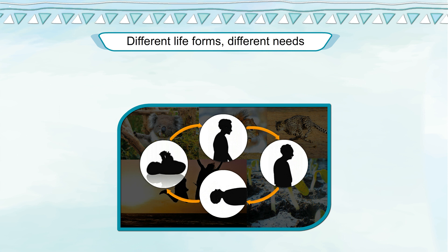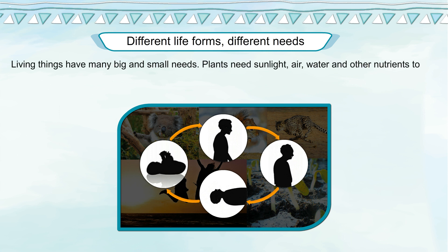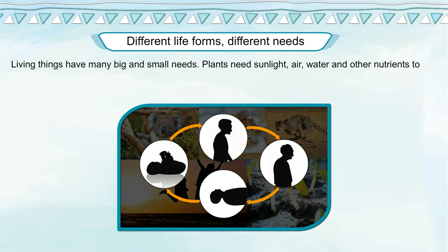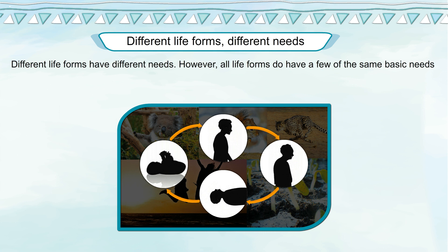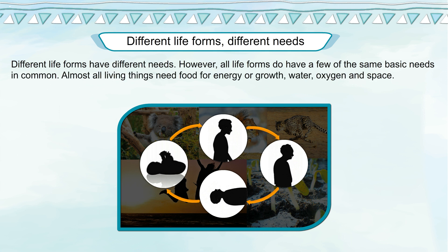Different life forms have different needs. Living things have many big and small needs. Plants need sunlight, air, water and other nutrients to make food through the process of photosynthesis. Birds need twigs to build nests. Fish need water to live, and humans need air, water, food, clothes and shelter. Living things depend on their environment to fulfill these needs. However, all life forms share a few of the same basic needs: food for energy or growth, water, oxygen and space.